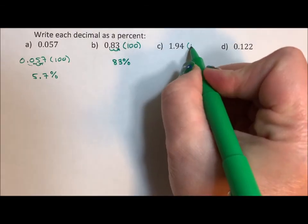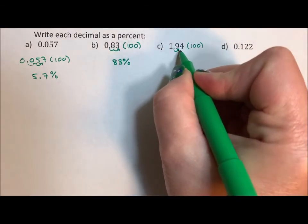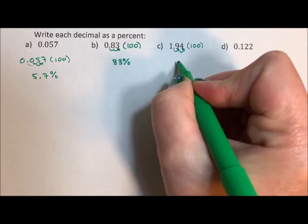If we take 1.94 and multiply by 100, we get 194 percent.